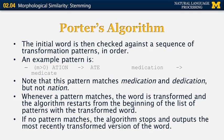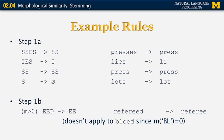When a pattern matches, the word is transformed and the algorithm restarts from the beginning of the list of patterns with the newly transformed word. This is repeated until there are no rules that match in the whole sequence. At that point, the algorithm stops and outputs the most recently transformed version of the word.